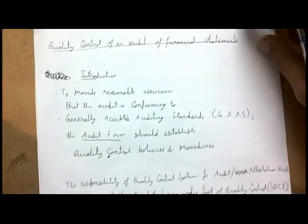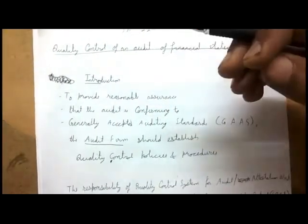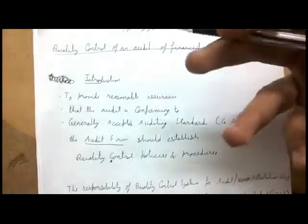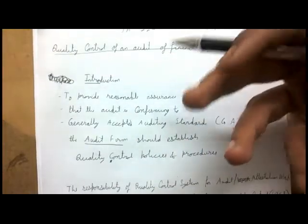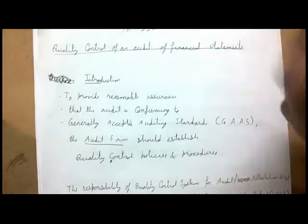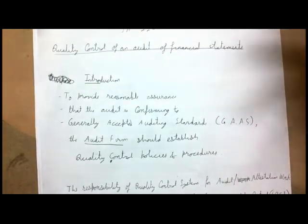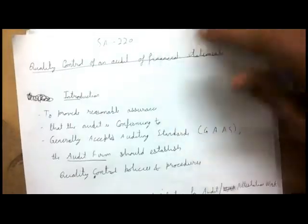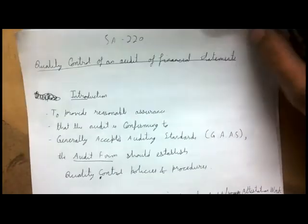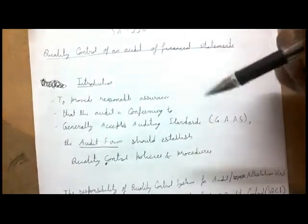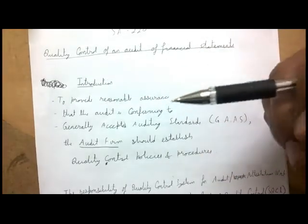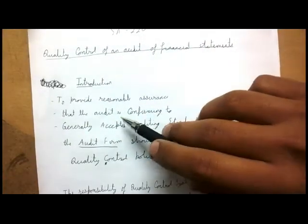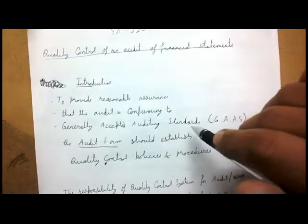Why do we need quality control procedures and policies? So that we can ensure the audit is complying with auditing standards such as SA 700 and SA 500. These standards need to be complied with, and quality control policies and procedures provide reasonable assurance that you are complying with them.